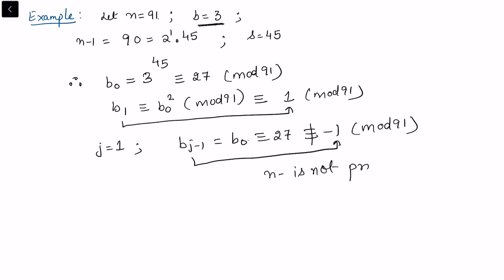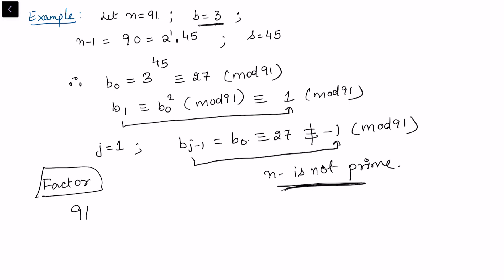Since bⱼ₋₁ is not congruent to -1 mod 91, we conclude n is not prime. We can then try to find the factorization of 91, and indeed 91 = 7 × 13, confirming it is composite. Other videos cover methods for factoring such integers.